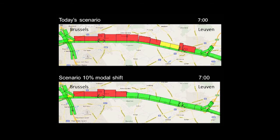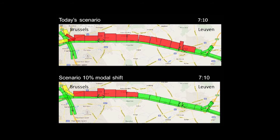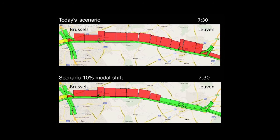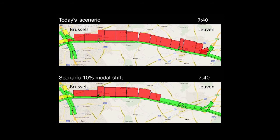Looking at the situation at 7 o'clock and 7:10, you can see that in the modal shift situation there is a traffic jam of course, but it's building up more slowly and it doesn't stretch as far as it does in the actual situation.